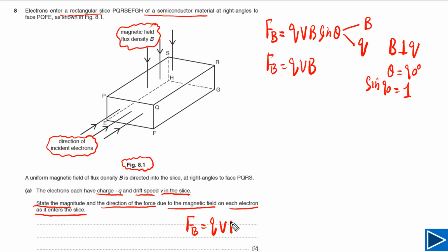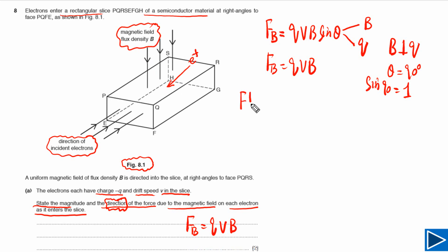Next, we need to find the direction of the force on the electron. For this, we can assume that as electrons are entering from one side, the positive charge will be entering from the opposite side. Now we have the direction of positive charge and the direction of the magnetic field, so we can use Fleming's Left Hand Rule to find the direction of the magnetic force on the electron.